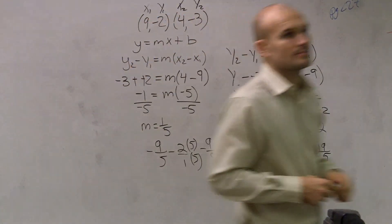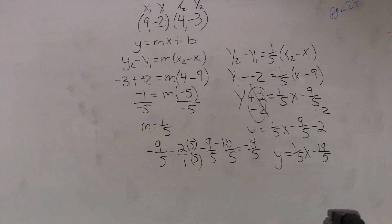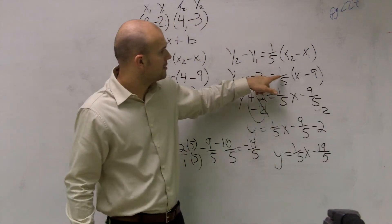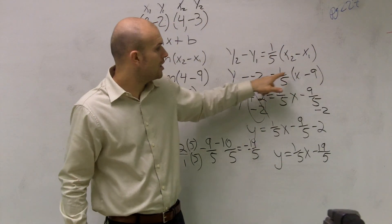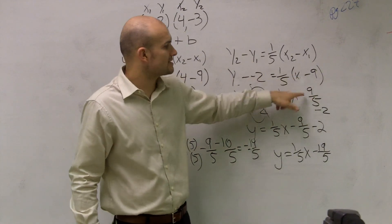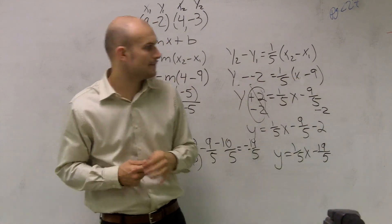Student: How did you get negative 9 over 5? Teacher: 1 fifth times x — 1 fifth times negative 9 is a negative 9 over 5. Student: All right. Teacher: Great.